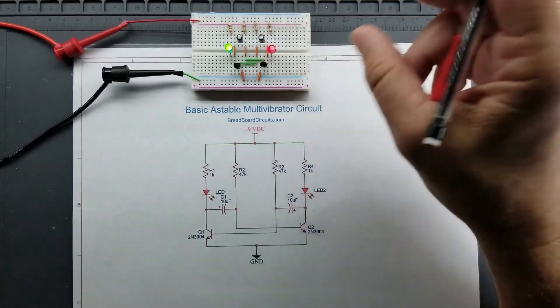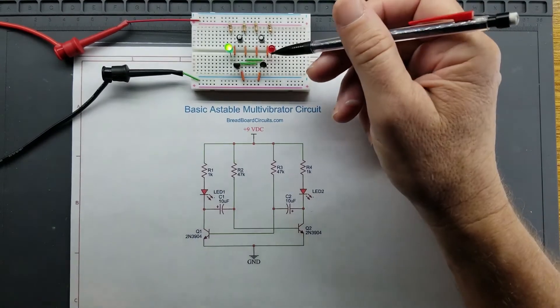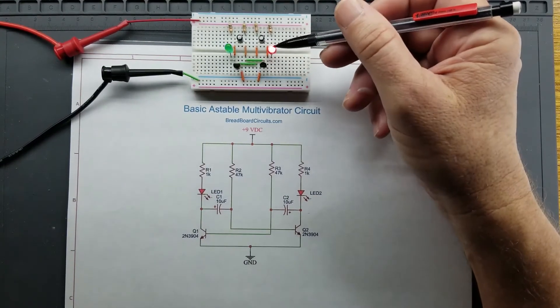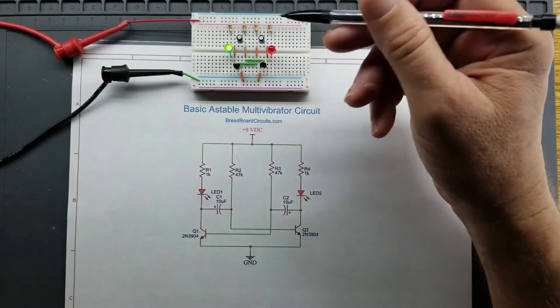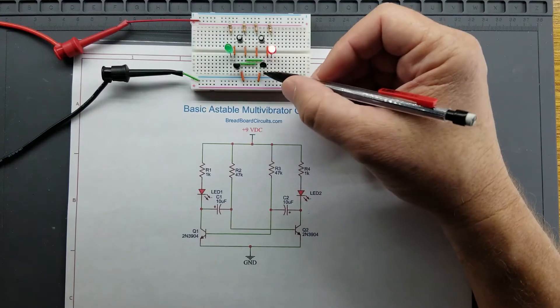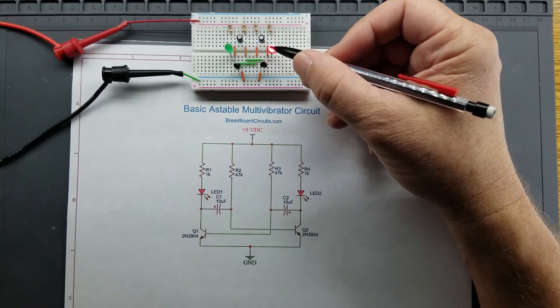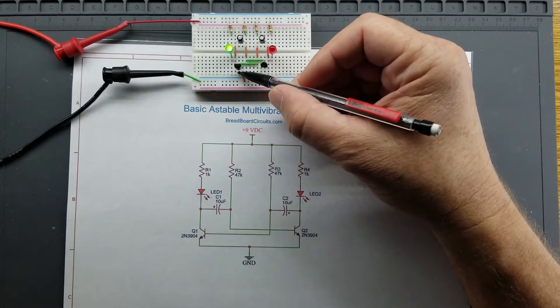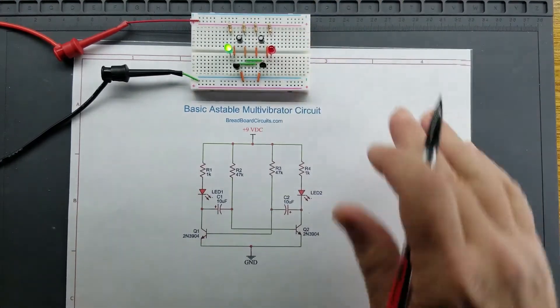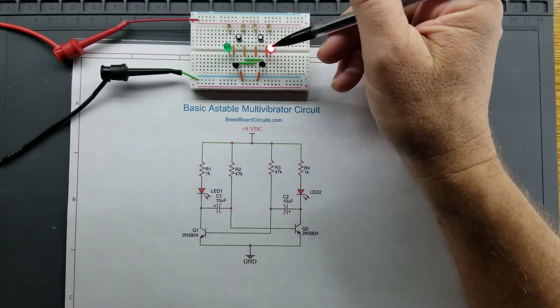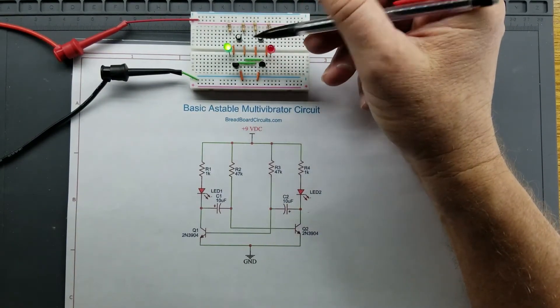This astable or free running multivibrator can also be compared to a bistable multivibrator which, for example, would be if you could apply a voltage to some place in the circuit, you could light this red LED and then apply a voltage to a different part of the circuit and light the green LED, and that green LED would stay on. So a bistable would have two distinct states.